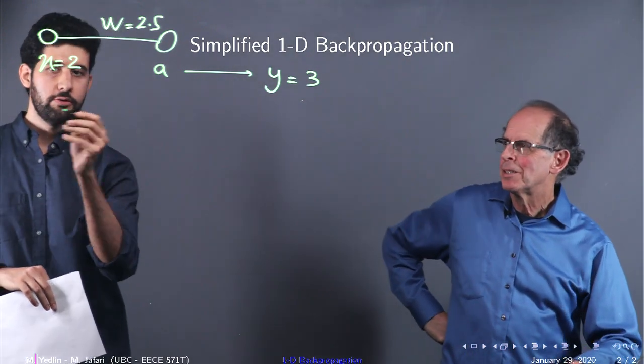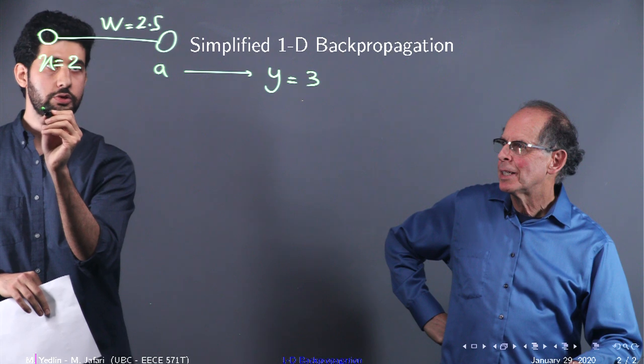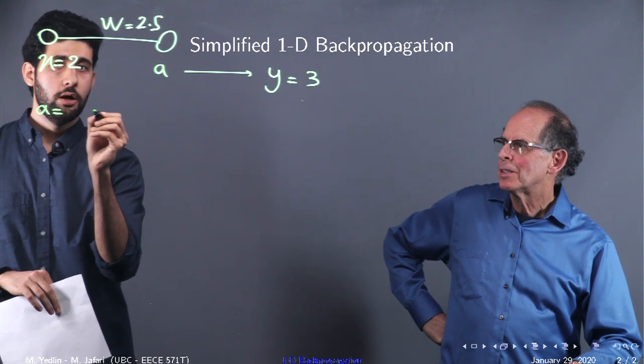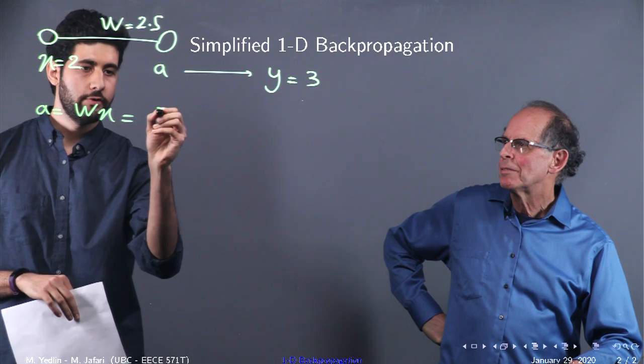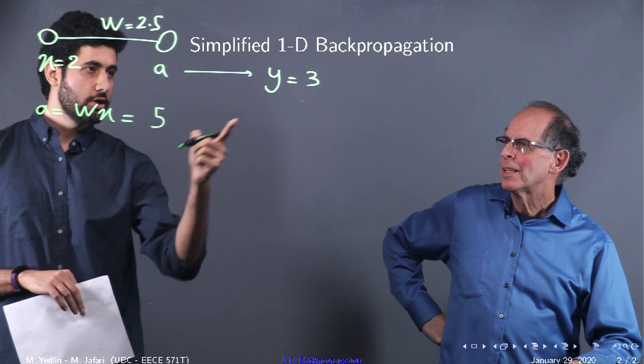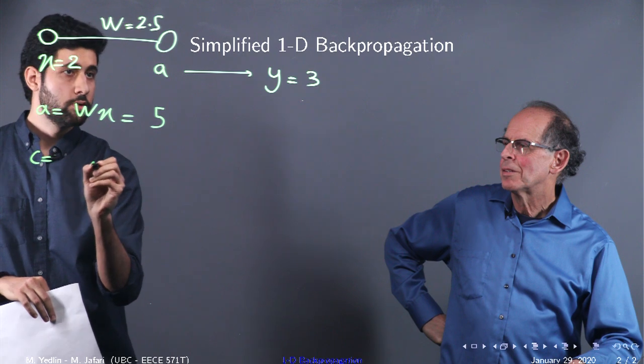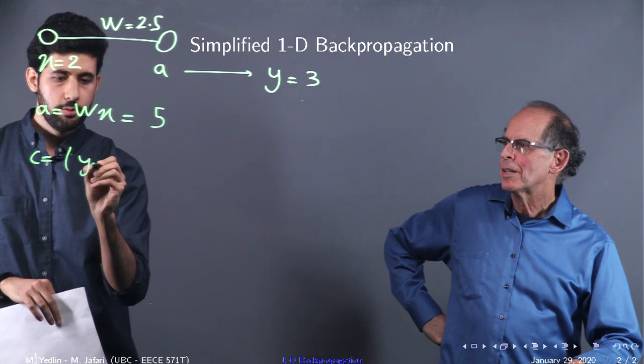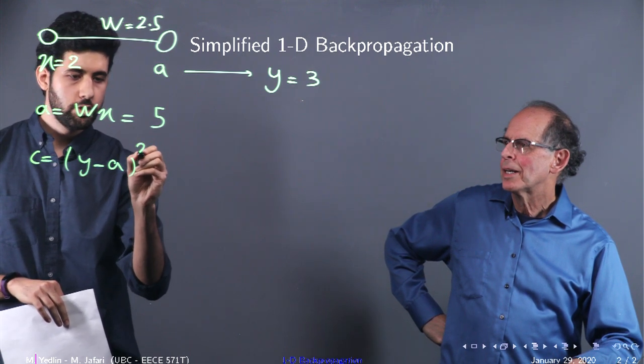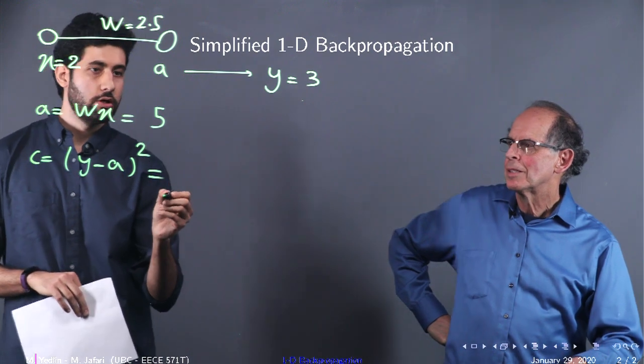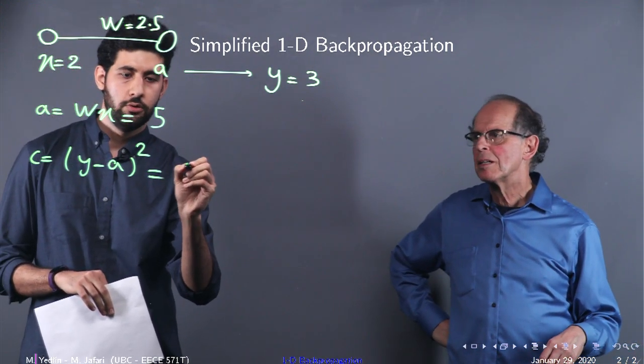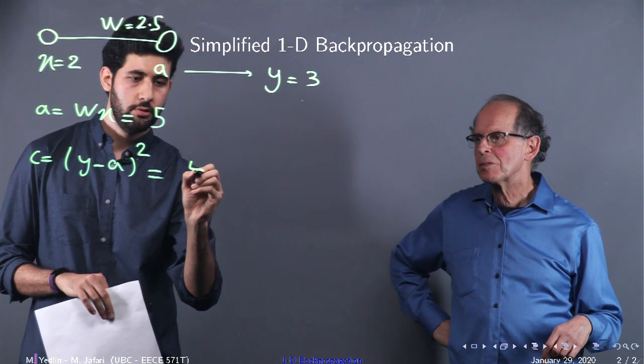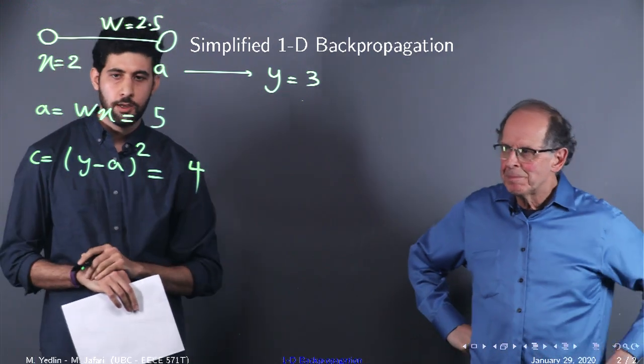Okay. So here, let's just write the equations, A equals to WX, which equals to 5. Yep. And the cost function here would be C equal to Y minus A squared, which is, like, 5 minus 3 is 4. 3 minus 5 squared, which is 4. Yep.